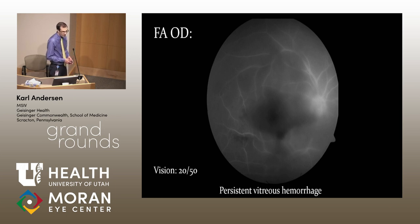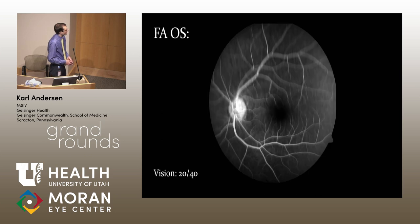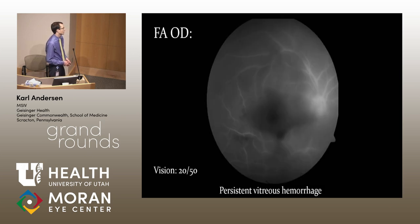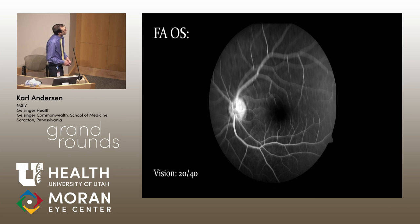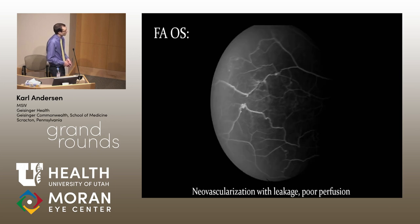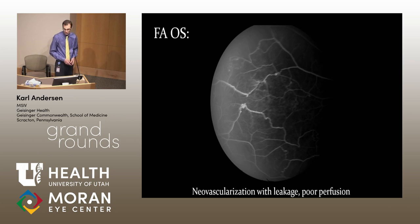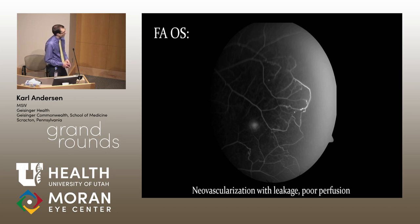Fluorescein angiography was done on a follow-up visit and showed a persistent vitreous hemorrhage a couple weeks later. You can see that the view is poor because of the blood still in the eye, but his vision was improving quickly. In the left eye, there's a little bit of motion artifact, but in the central macula his FA was pretty good. Out in the periphery, he had neovascularization and poor perfusion consistent with proliferative retinopathy, microaneurysms, and a little bit of leakage.